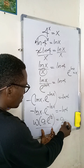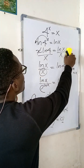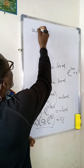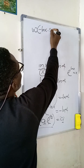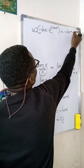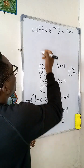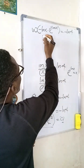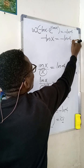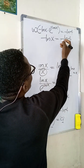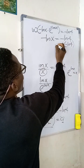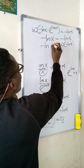Applying the Lambert W function, I have W of negative ln(x) multiplied by e to the power of negative ln(x), equal to W of negative ln(4). According to the Lambert W rule, the left side simplifies to negative ln(x), so negative ln(x) equals W of negative ln(4).